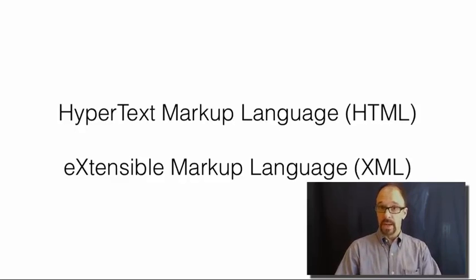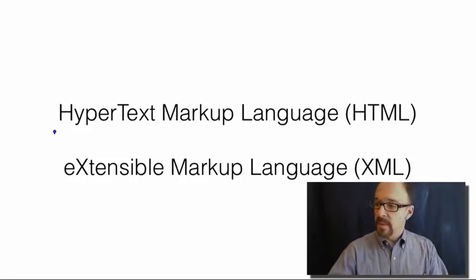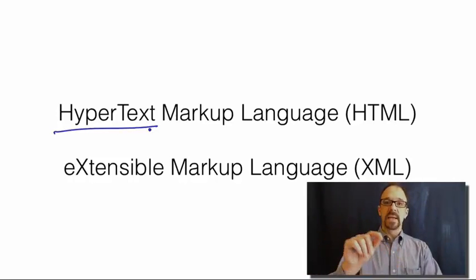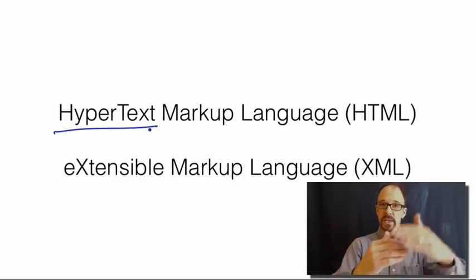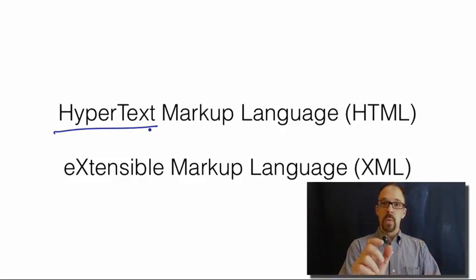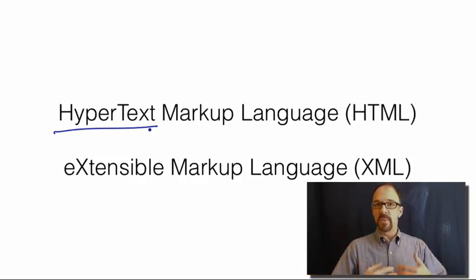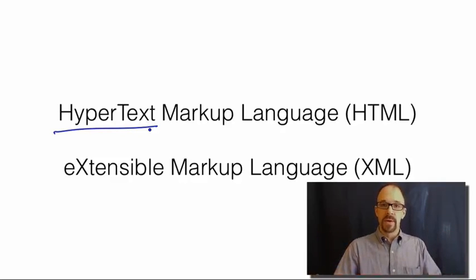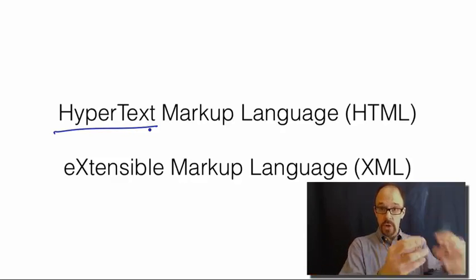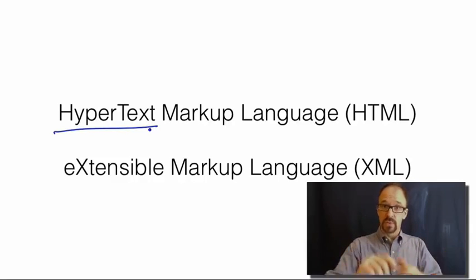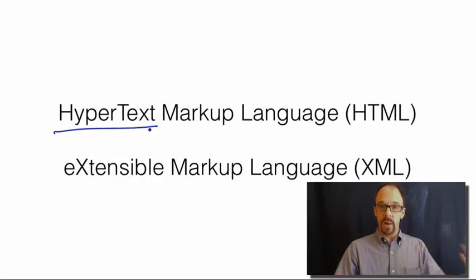They're both called markup languages, but they do quite different things. Hypertext is text in a networked environment where the document itself contains links between one document and another. Basically that describes pretty much every document on the entire web. The whole idea of hypertext is what makes the web a web — it's got nodes, which are pages, and links between those nodes, which are hypertext links. The whole notion of hypertext is deeply ingrained in our consciousness these days because we're so used to dealing with hypertext documents that we don't really think about it anymore.